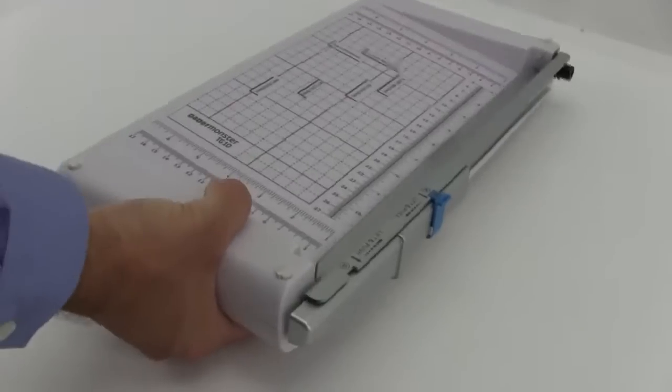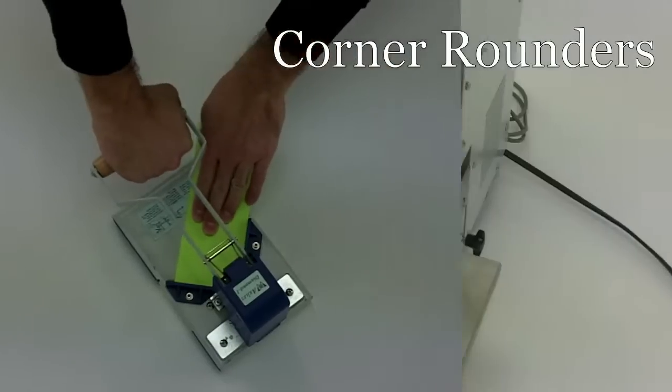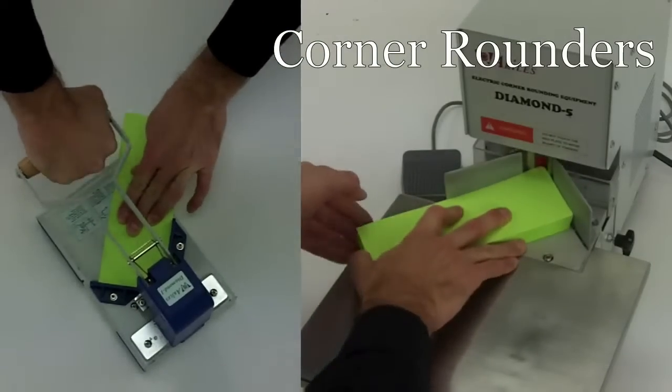We have industrial size cutters as well as portable ones. We have trimmers that are 2-in-1 and sometimes 3-in-1 combinations. Corner rounders, both electronic and manual, we have it.